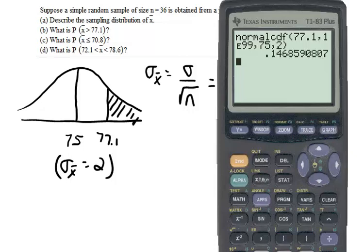And then we get 0.1468, or 69 if I'm rounding. So 0.1469.